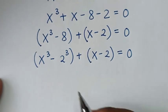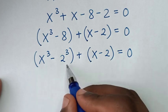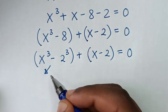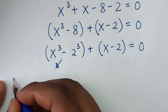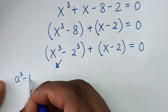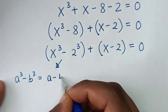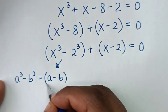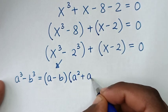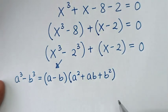Then in the next step, this is in the form of a perfect cube, so we will apply the perfect cube rule which is: a power 3 minus b power 3 is equal to a minus b, times a squared plus ab plus b squared.